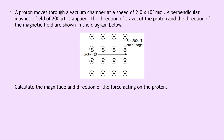So let's get started. Question one says a proton moves through a vacuum chamber at a speed of 2.0 times 10 to the 7 meters per second. A perpendicular magnetic field of 200 micro tesla is applied. The direction of travel of the proton and the direction of the magnetic field are shown in the diagram. Here we've got a proton moving to the right, and our magnetic field is out of the page with a magnetic induction of 200 micro tesla.